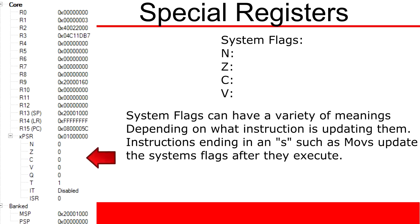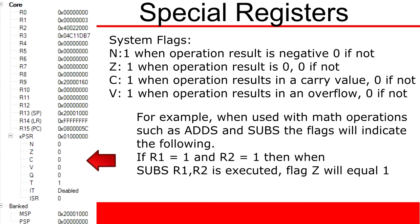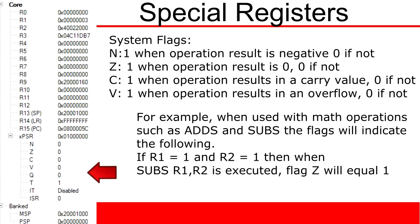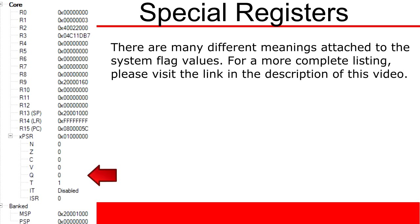The meaning of these flags will vary from function to function. As an example, if I had a value of 1 in R1 and in R2, and then I used the subtract function with an S at the end, then what would happen is the value of R1 would be subtracted from the value of R2, and the flag Z would be updated to equal 1. As you can see above, if the Z flag is equal to 1, then that means the operation result was 0. There are a large amount of context-sensitive flag meanings, and I will provide a link in the description of this video which supplies a list of them.